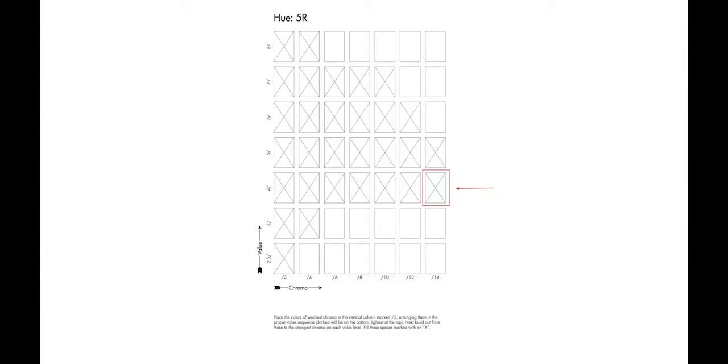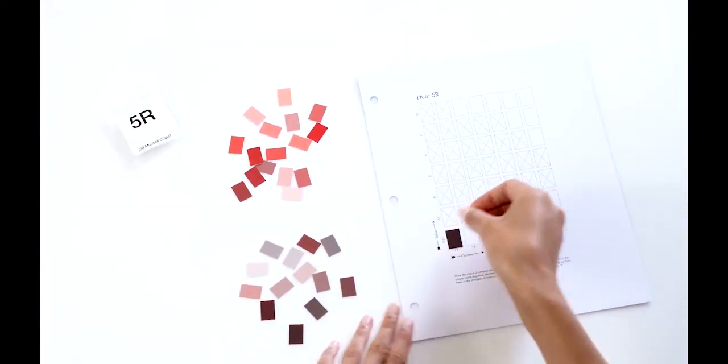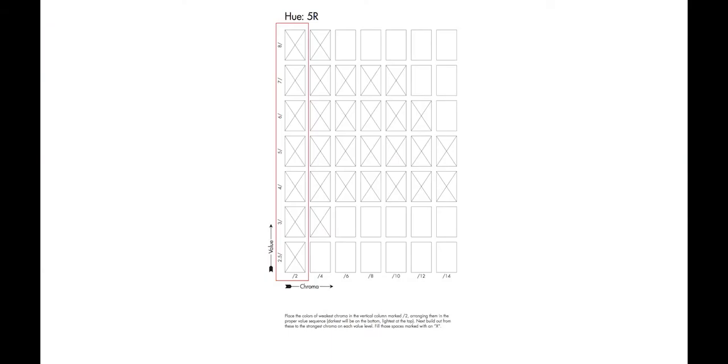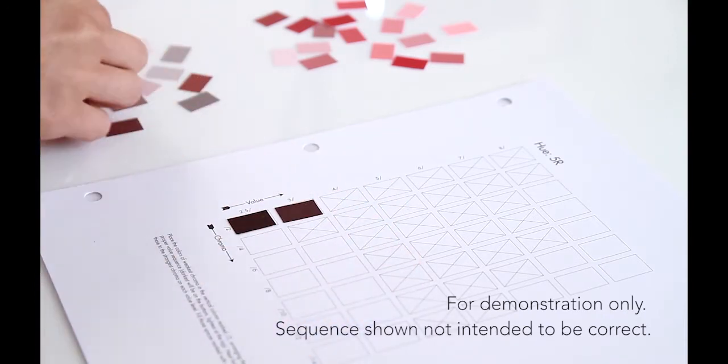For the hue charts, place chips only on the spaces marked with an X. First arrange the colours of lowest chroma in the vertical chroma slash two column of the chart, from darkest at the bottom to the lightest at the top.